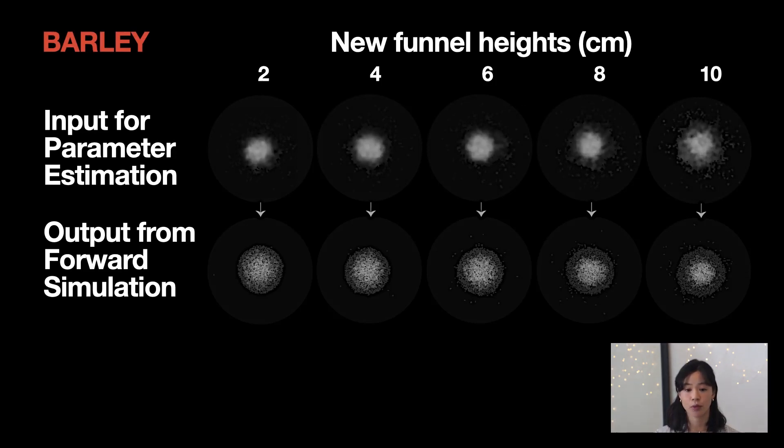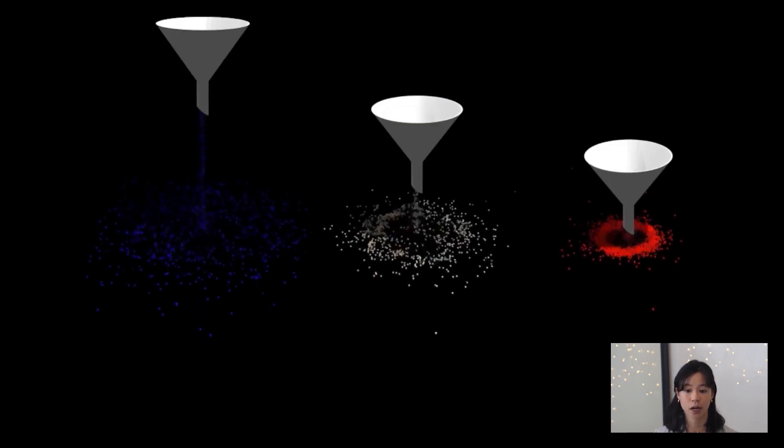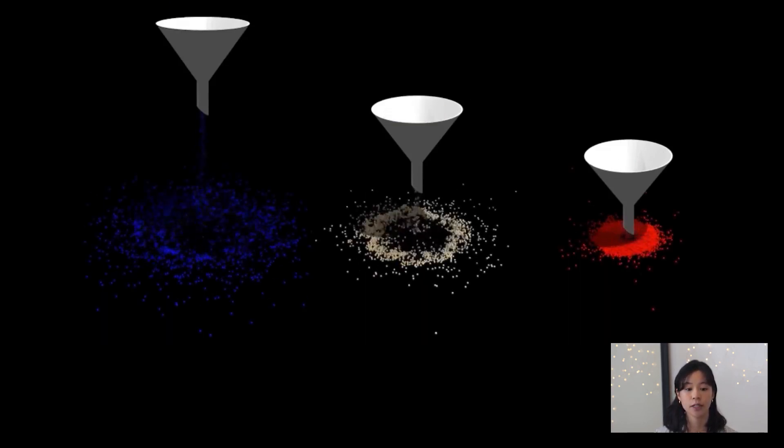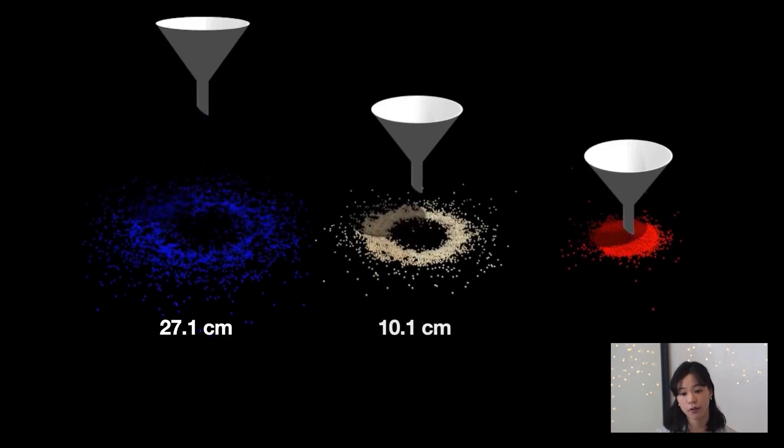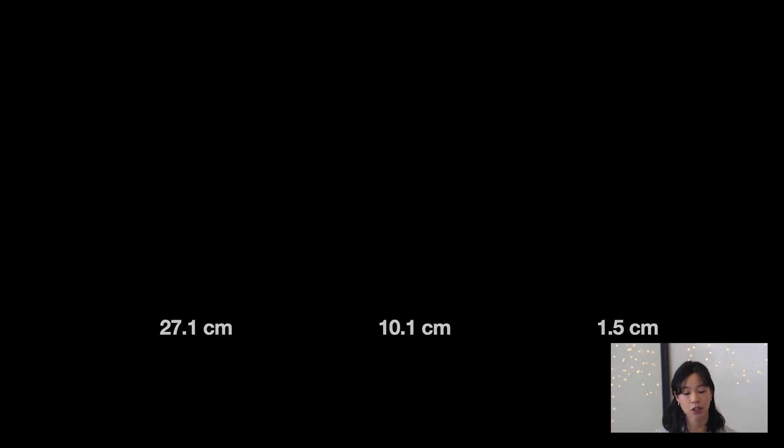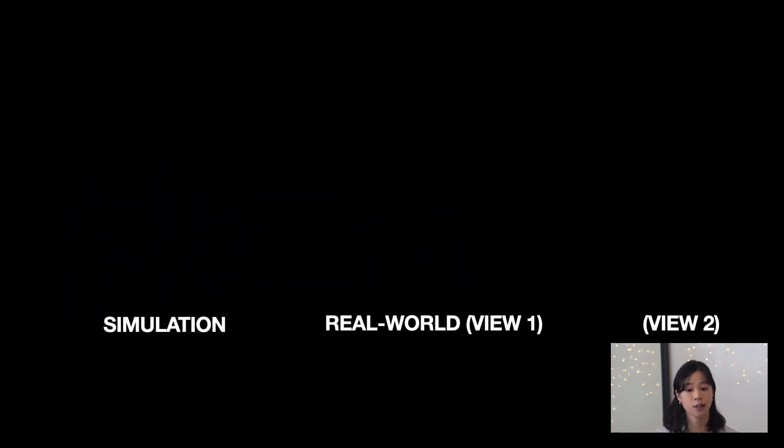The encouraging results from the real world to simulation calibration experiments suggested that it may be possible under this framework to enable an industrial robot to pour granular material into a desired shape. So using the inferred material parameters of couscous, we trained a new Bayes-Sim model to infer the required funnel height to form a desired ring or pile shape. Three funnel heights were then inferred, corresponding to a desired pattern of two concentric rings with an inner pile. The robot was then commanded to pour couscous from these heights, resulting in the desired pattern.